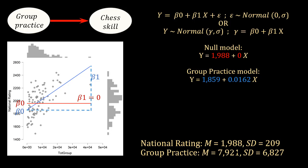Then we've got group practice that was measured in number of accumulated hours until they participated in the study. And the mean is 7,921 hours, with a huge standard deviation of 6,827.